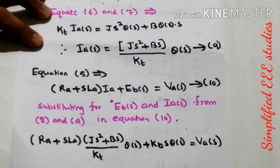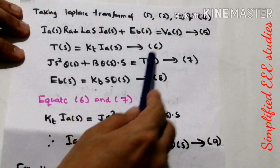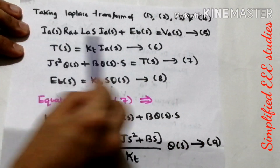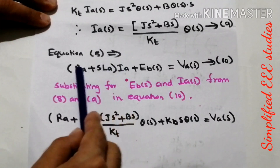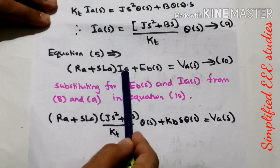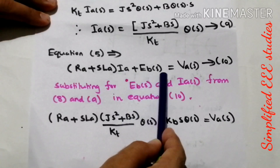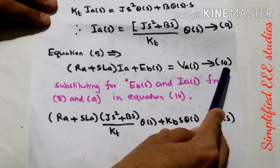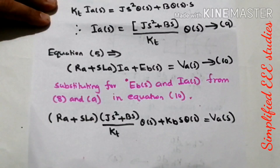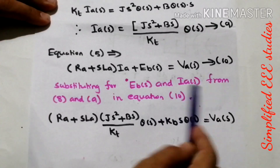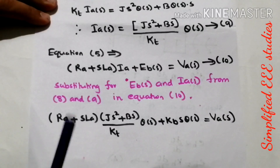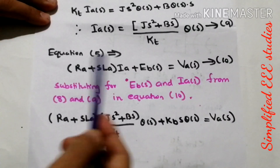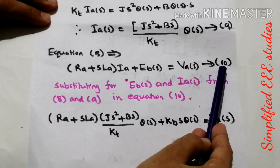Now let us recall equation number 5. Equation 5 implies: (Ra + S·La)·Ia(S) + Eb(S) = Va(S). Please call this equation number 10. Now, substitute for Eb(S) from equation 8 and for Ia(S) from equation 9 into equation 10.